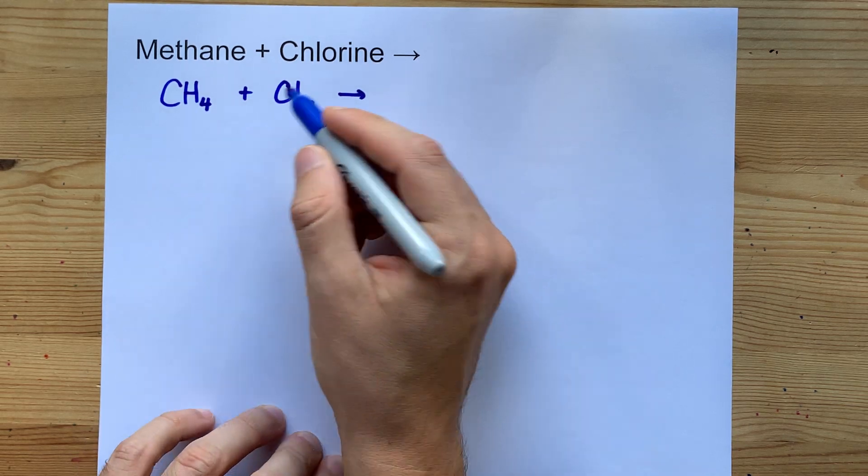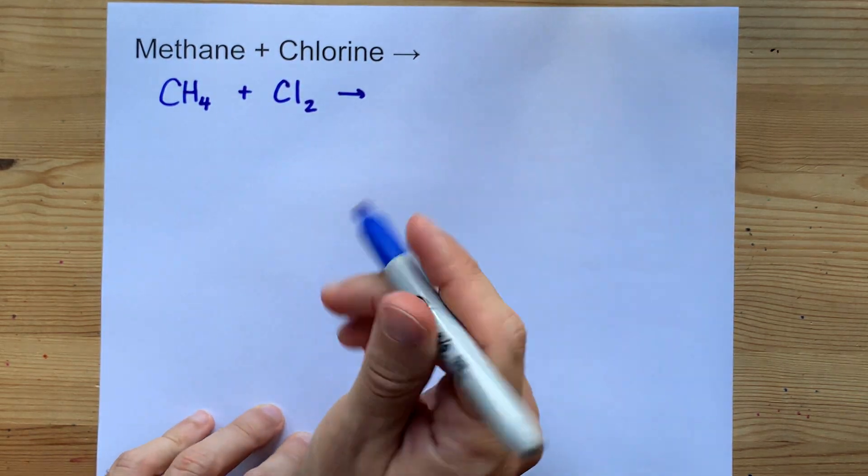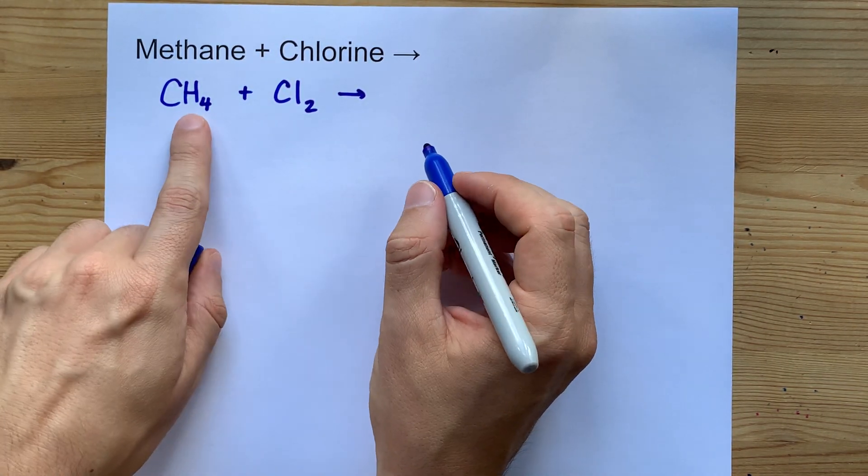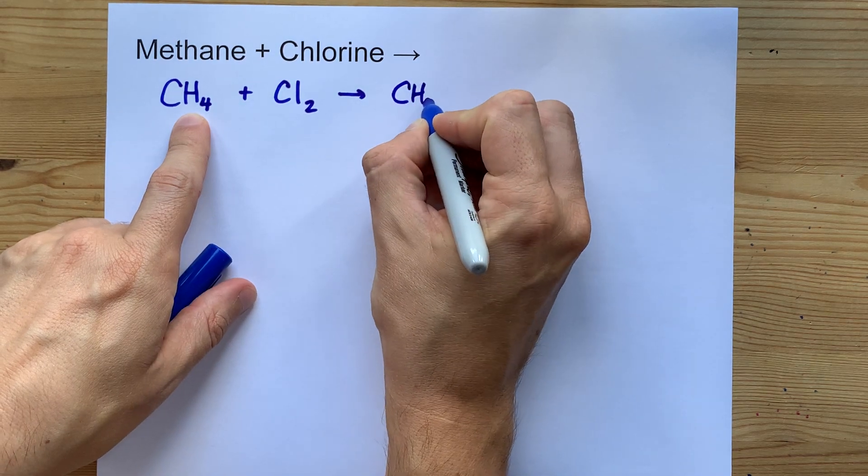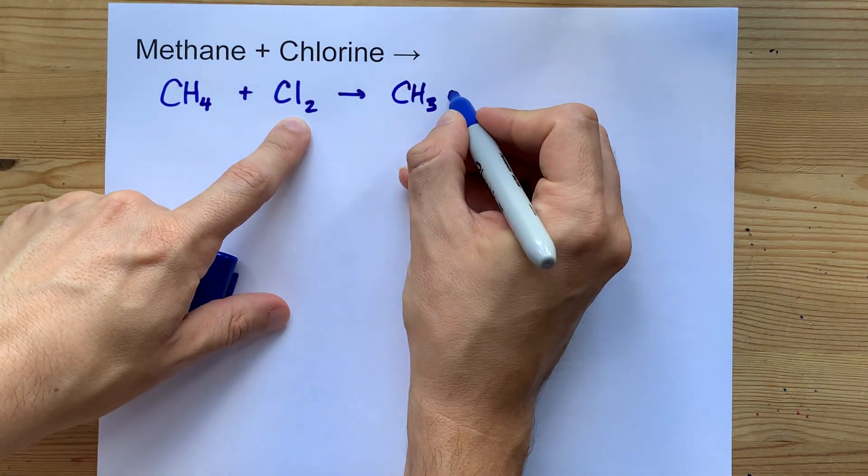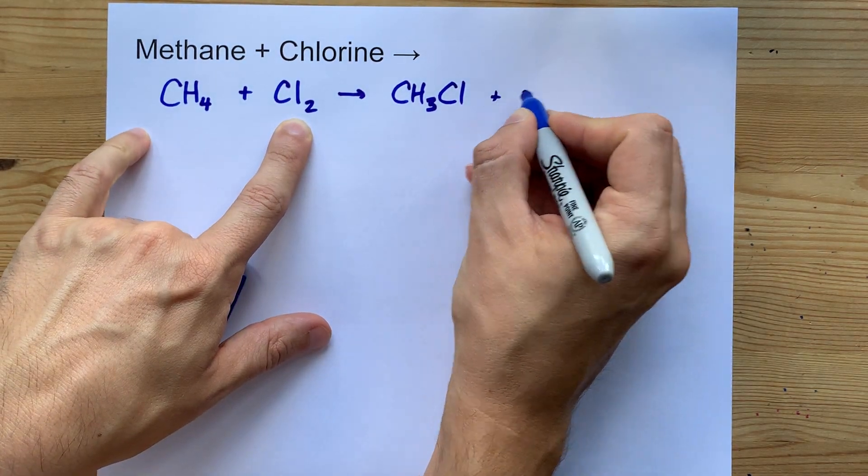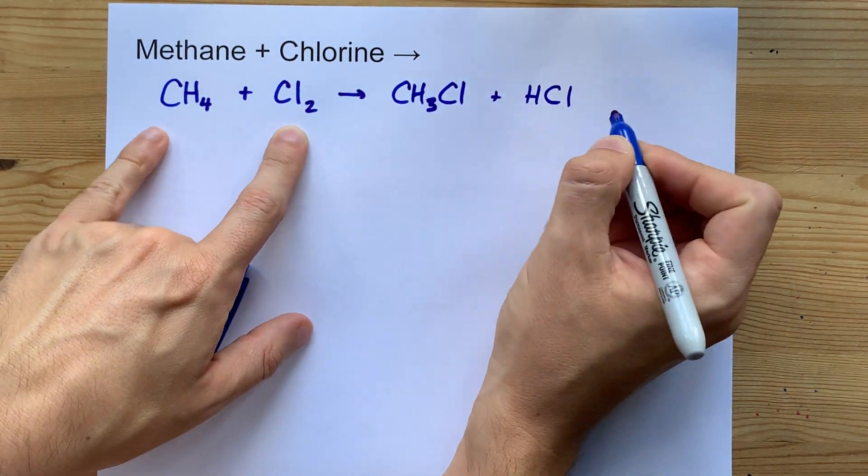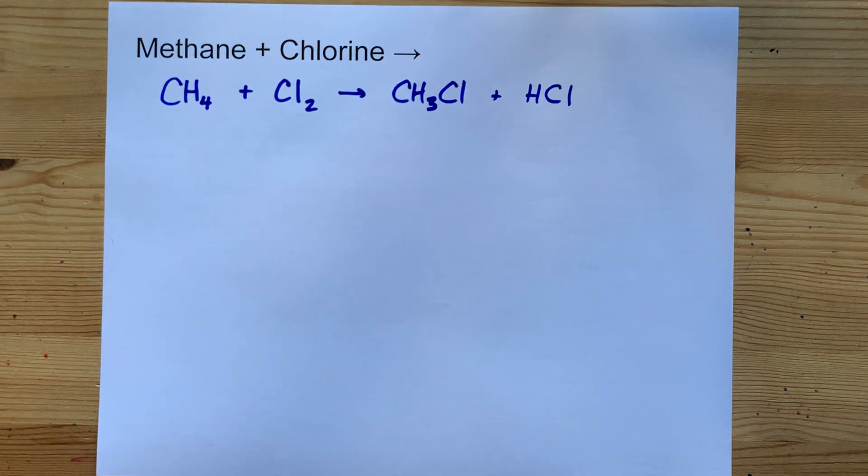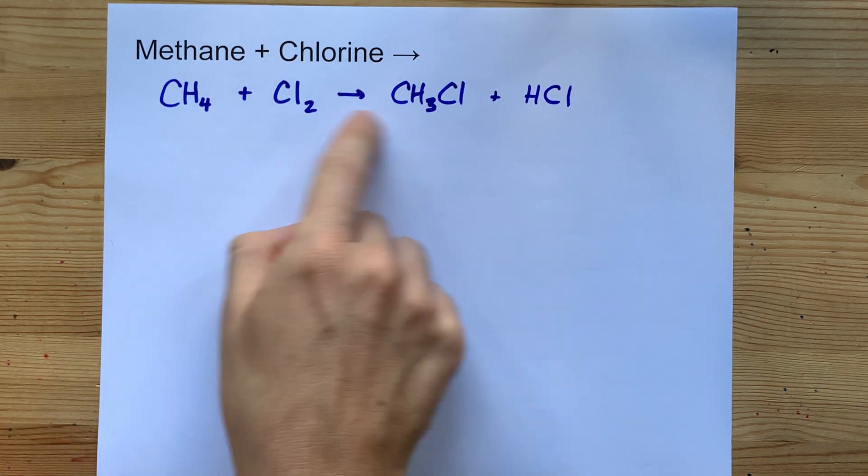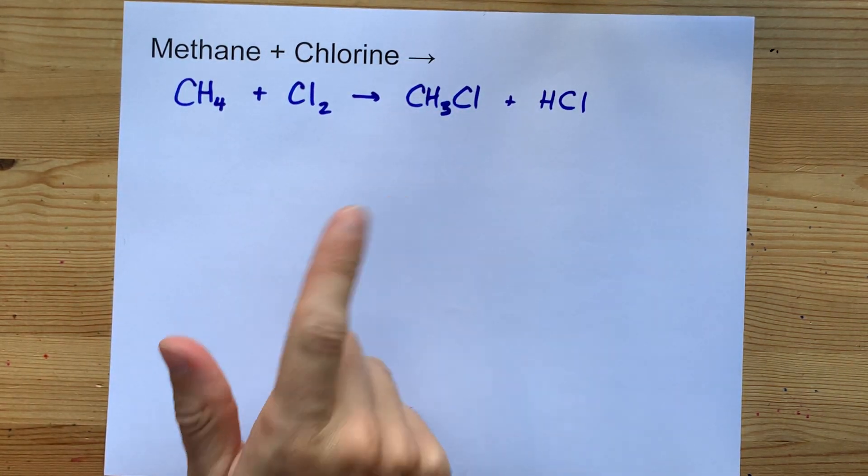You might think that it operates something similar to a double displacement reaction, where a CH3 from this will combine with one of the Cls to become CH3Cl, and then the leftover H and Cl will react together as well. Now that is what happens, but certainly not double displacement.